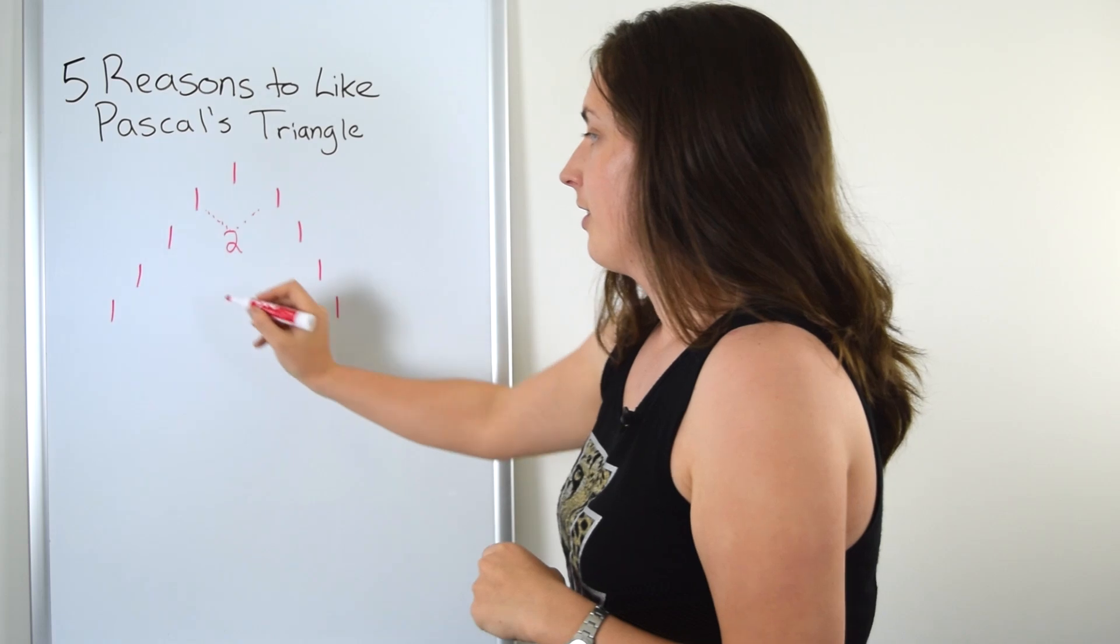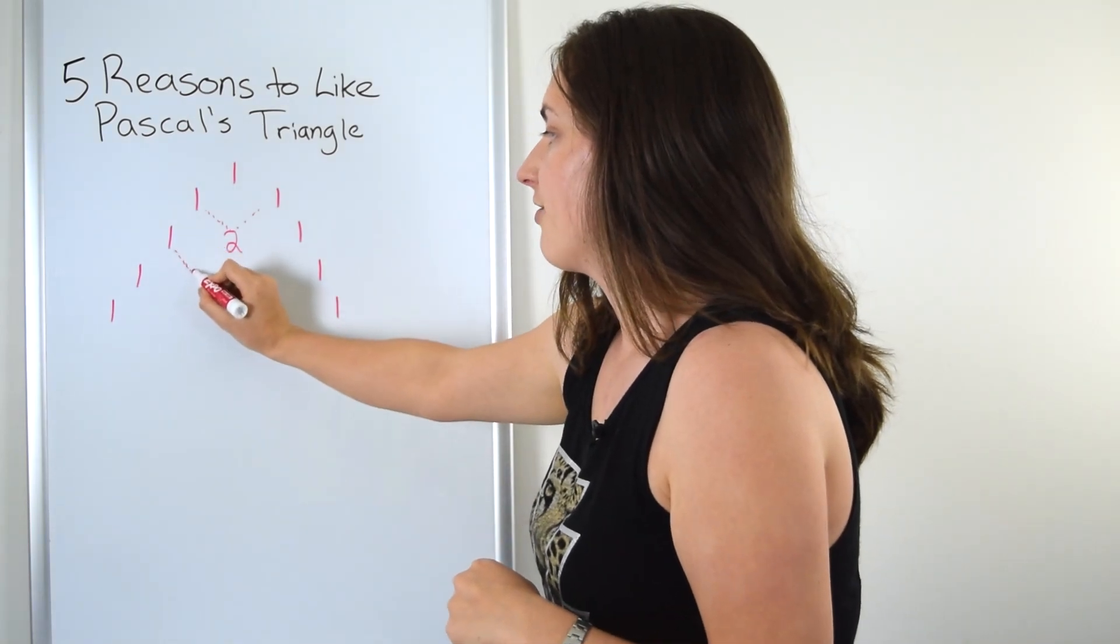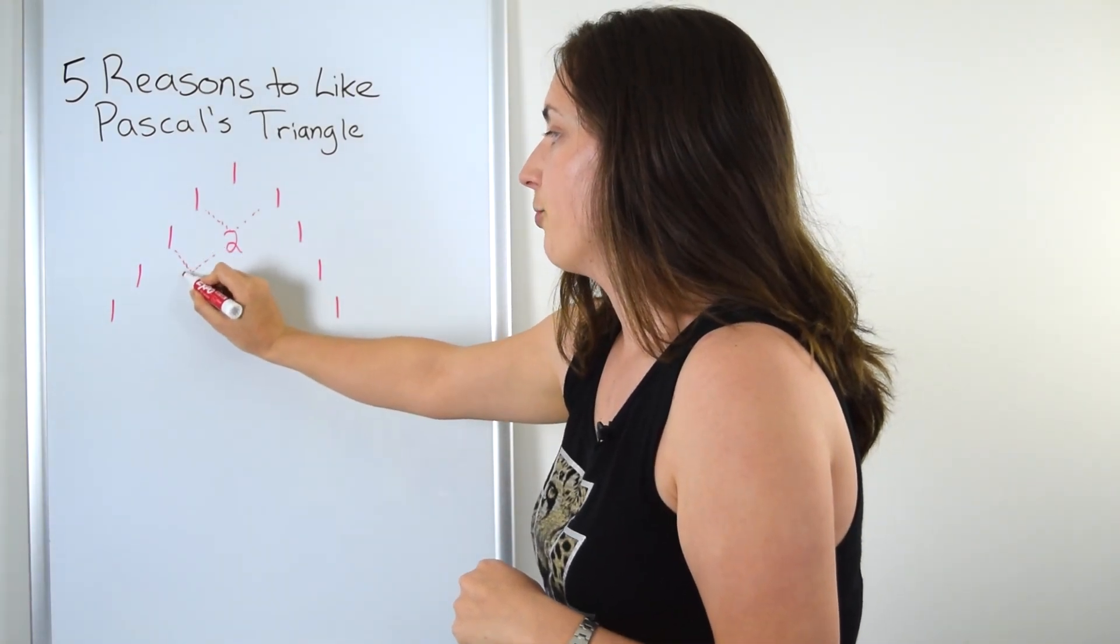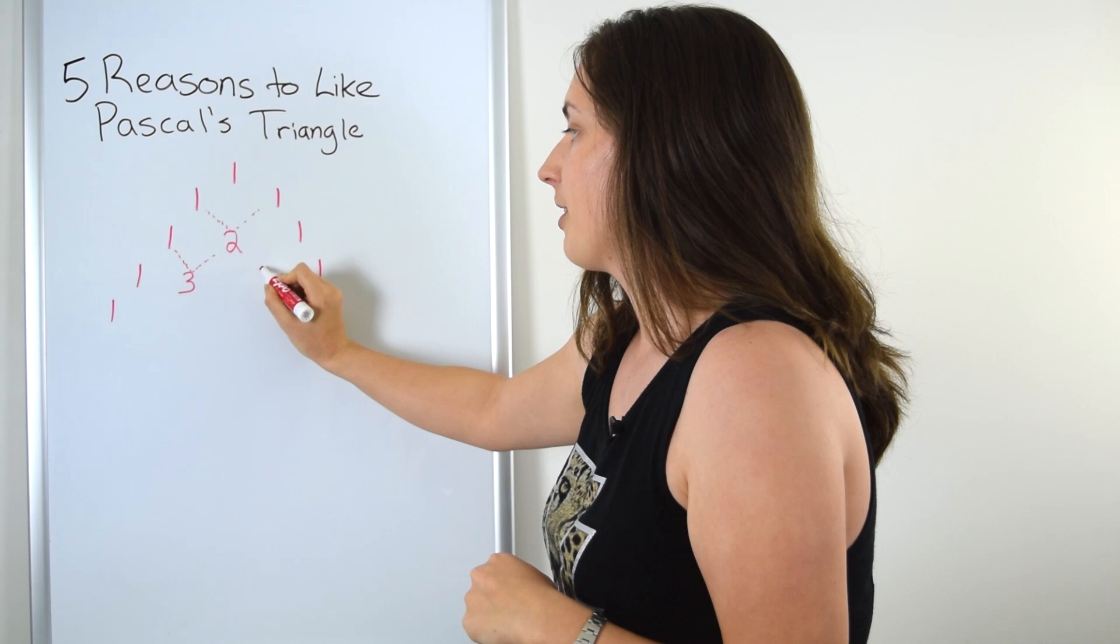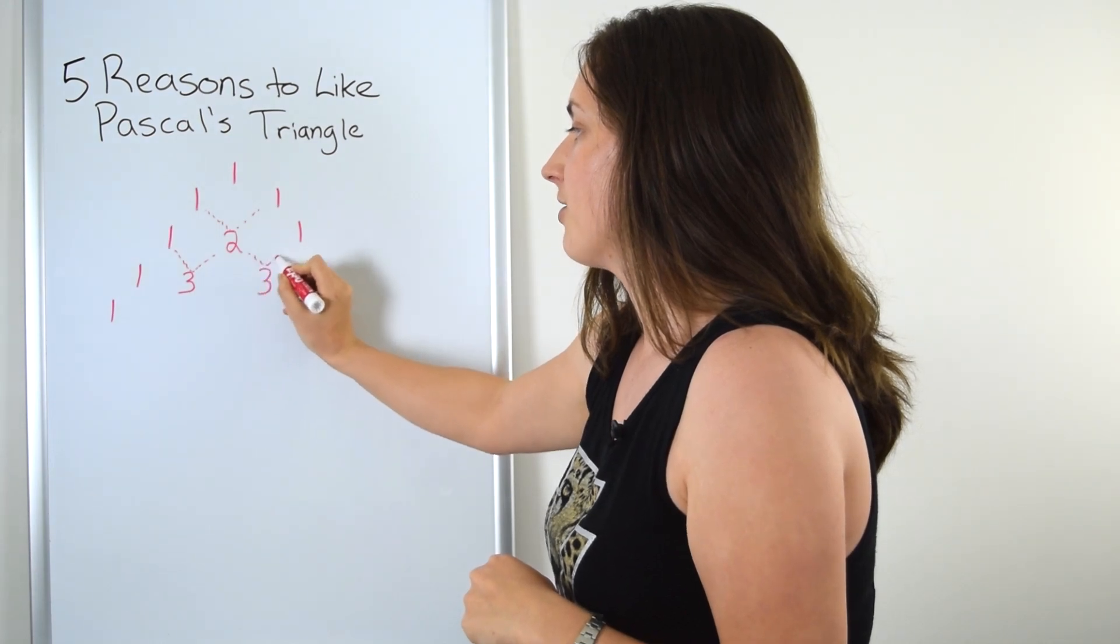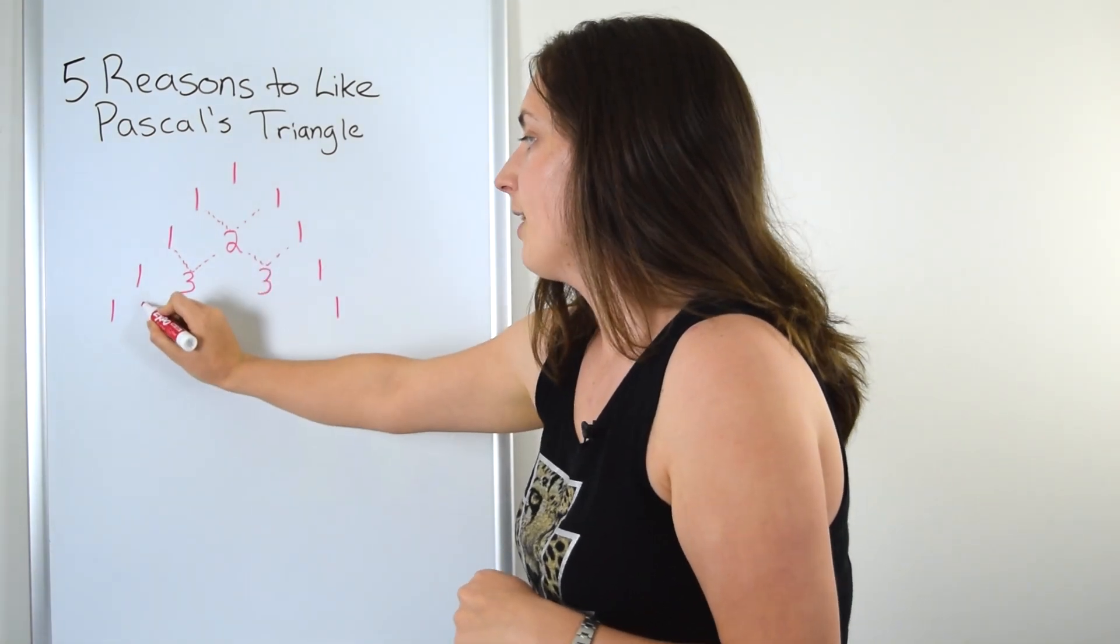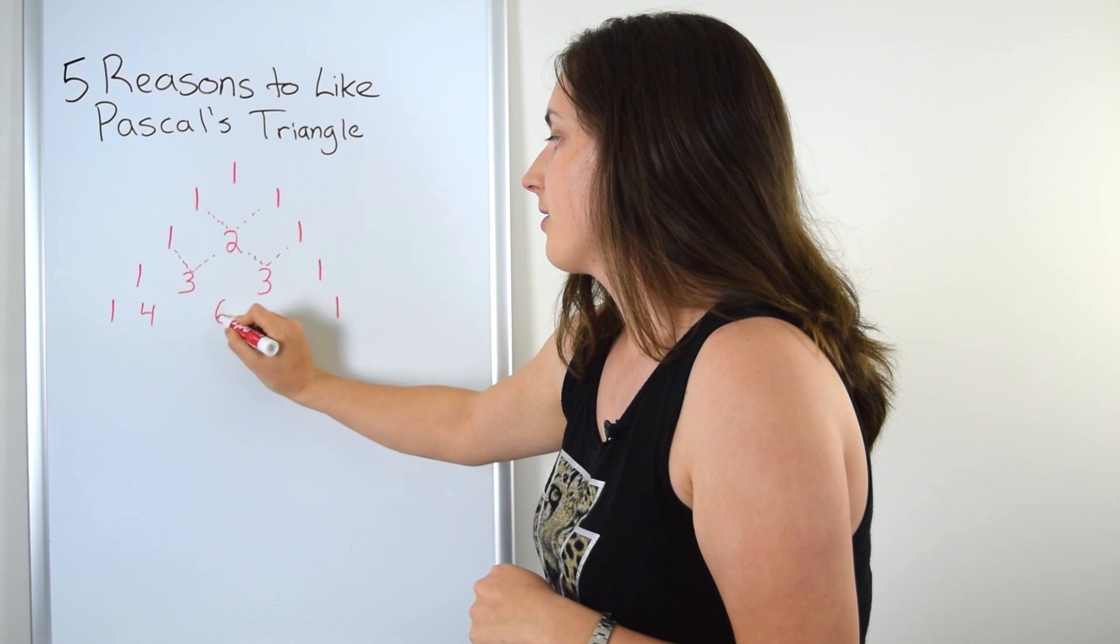Let's continue. To build up this next entry, I just have to add up this one and this two. And I get three. Similarly here, I get three from adding these two. And I can keep going. I get four, six, and four.